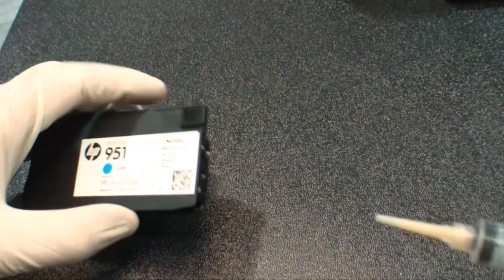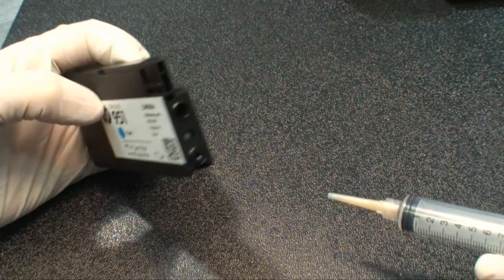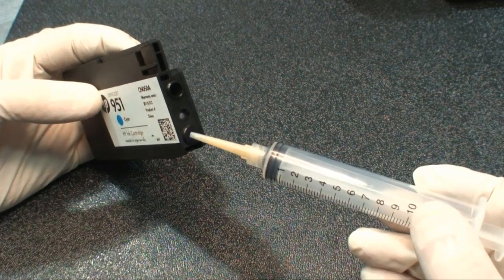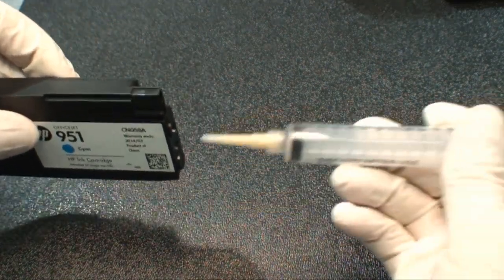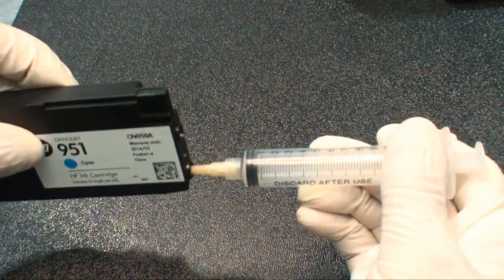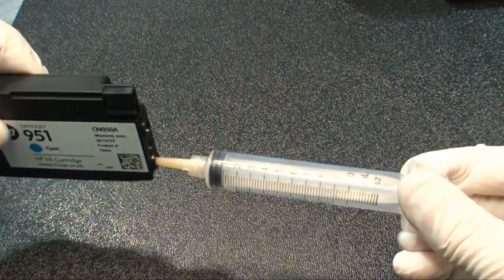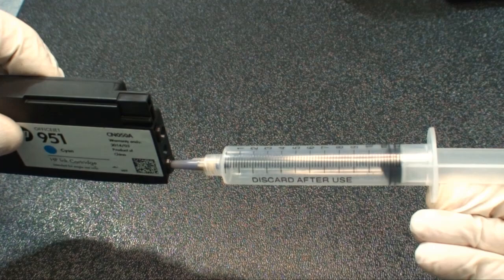To fill the cartridges, first place the plastic needle tip that you punched holes in on the 10 milliliter syringe. Holding the cartridge with the exit port at the bottom, insert the tip into the exit port and pull back on the plunger to remove any excess ink.